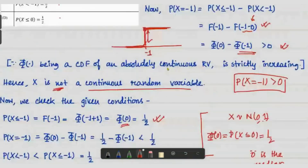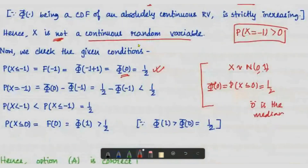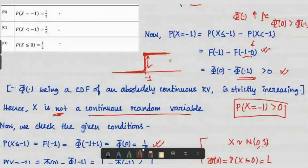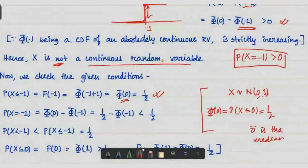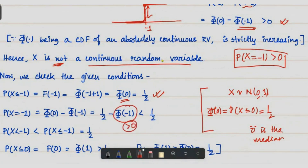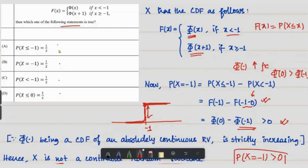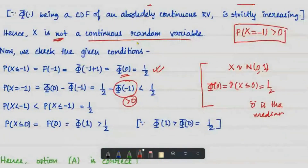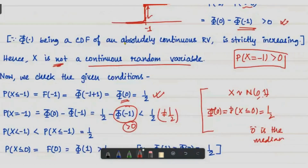This option is correct. Now we check P(X = -1), which we already calculated as Φ(0) minus Φ(-1), which equals one-half minus some positive quantity. This is strictly less than one-half, so P(X = -1) is not equal to one-half.